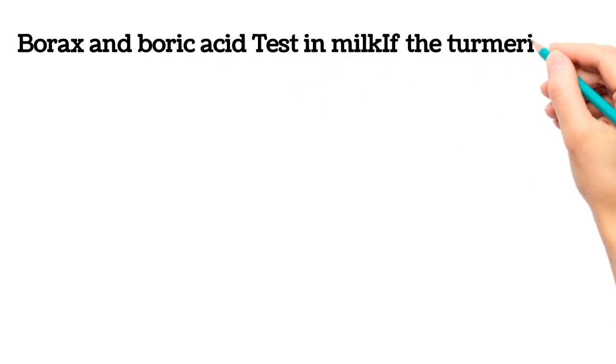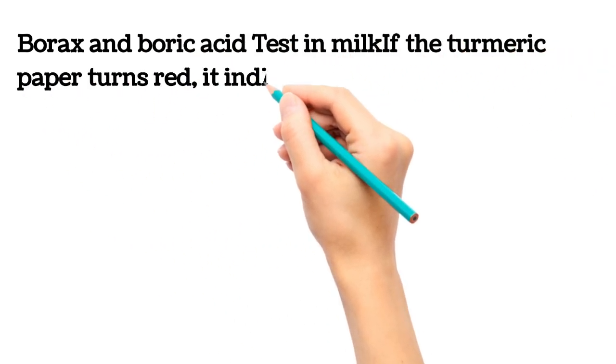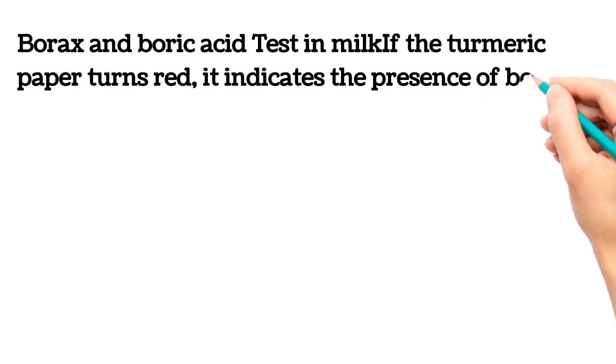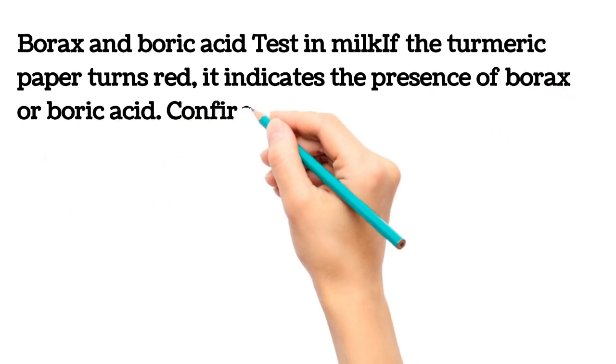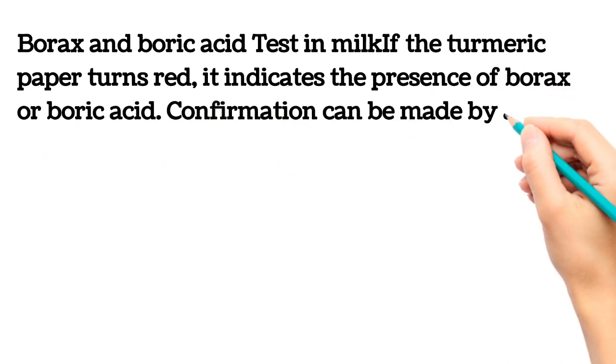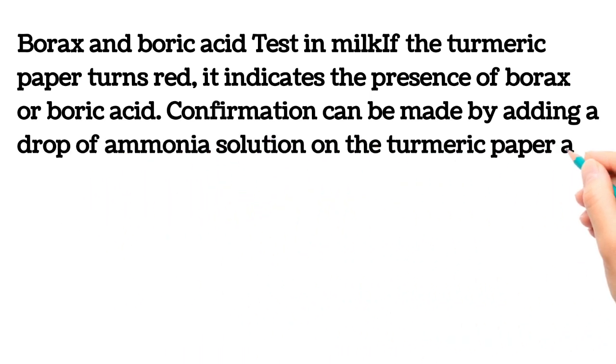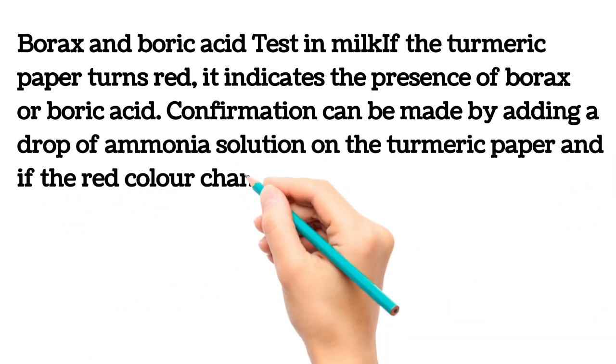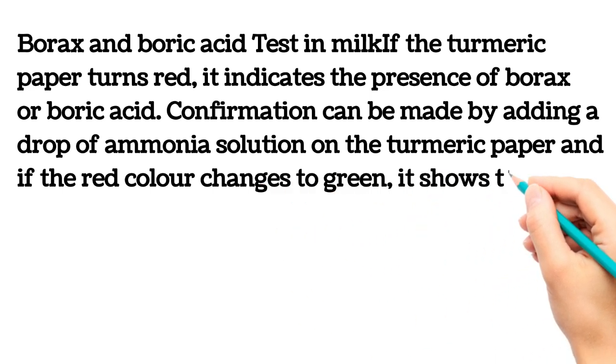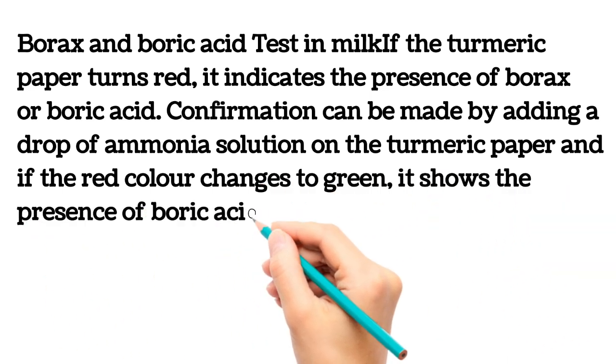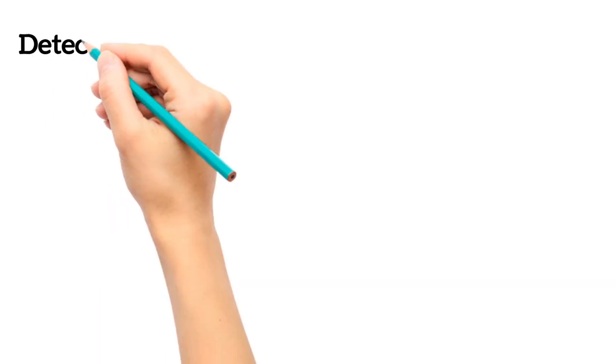What is borax and boric acid test? It is a test in milk. If the turmeric paper turns red, it indicates the presence of borax or boric acid. Confirmation can be made by adding a drop of ammonia solution on the turmeric paper and if the red color changes to green, it shows the presence of boric acid.